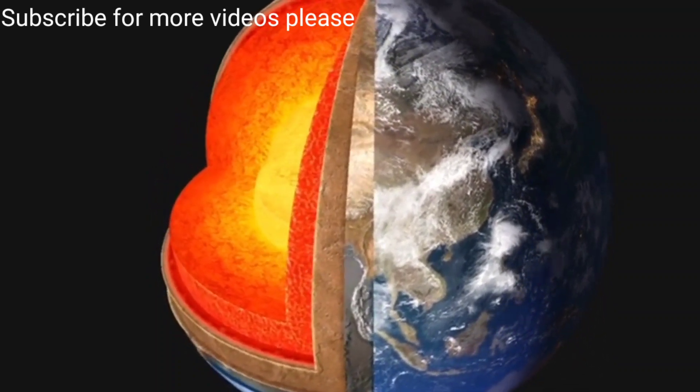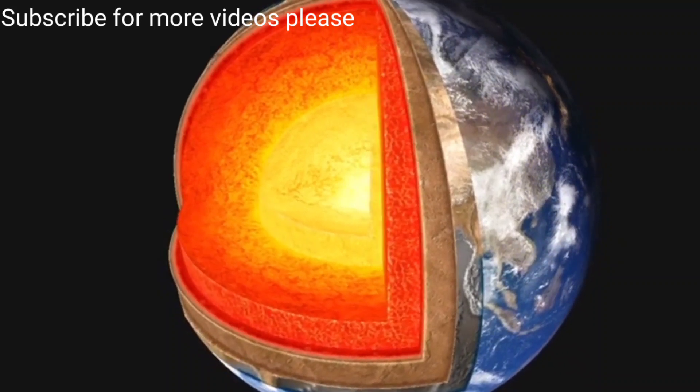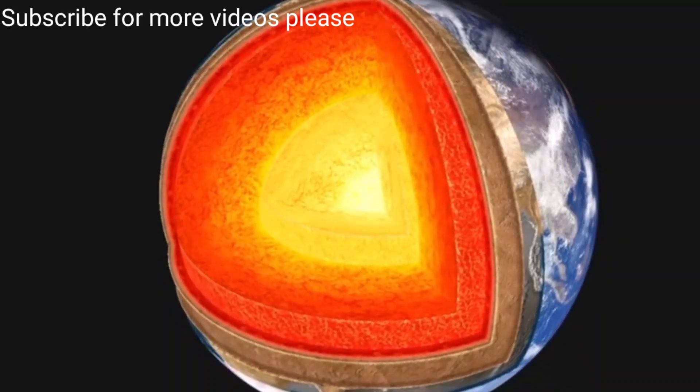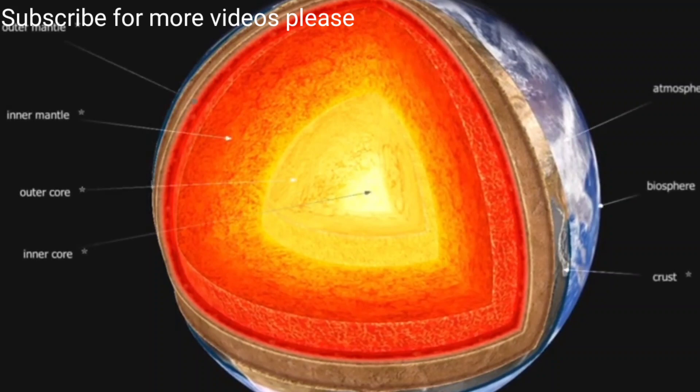The atmosphere protects us from ultraviolet radiation and a multitude of meteors. The magnetic field of the Earth protects living organisms from cosmic radiation.